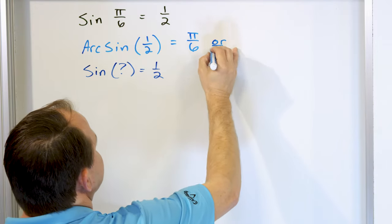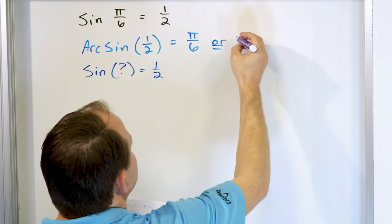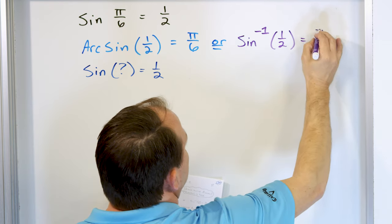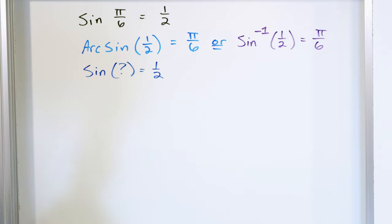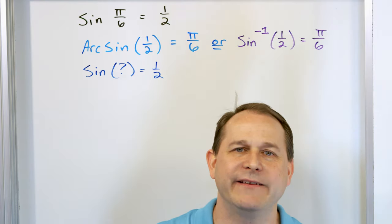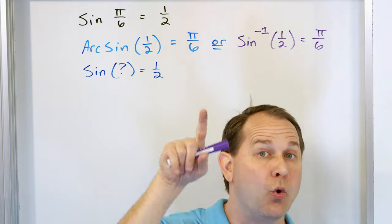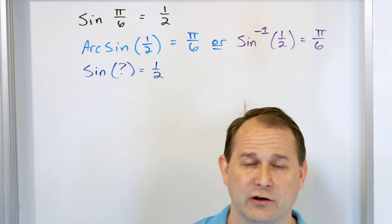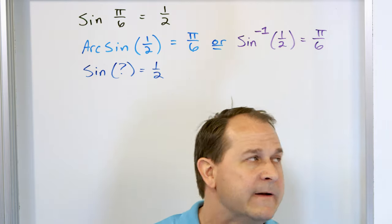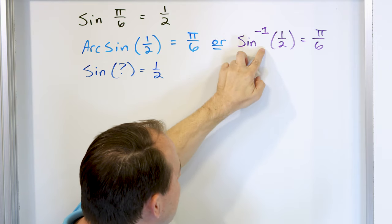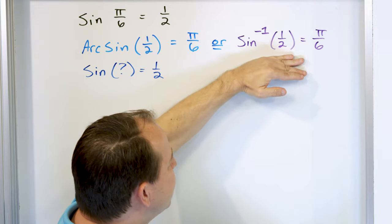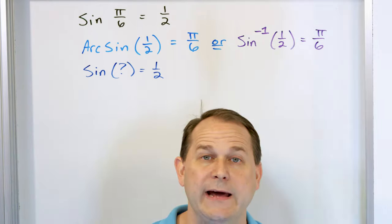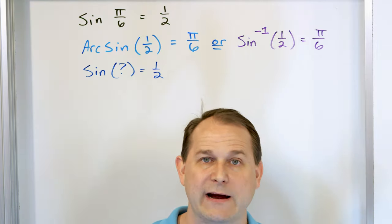You can also write arc sine in another way: sin⁻¹(1/2) = π/6. This representation is exactly the same as arc sine. When you see sine to the negative one power, it does not mean raised to the negative one power — it does not mean one over sine. The negative one is not an exponent; it means inverse function. It's very confusing notation, so it's much cleaner to say arc sine, but you'll see it written both ways in books.